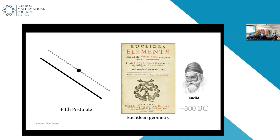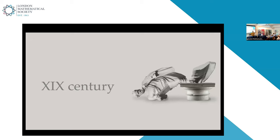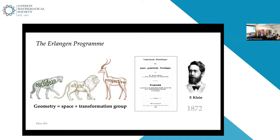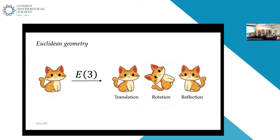Euclidean geometry had a special postulate about parallel lines that more than 1,000 years of illustrious mathematicians tried to prove, to no avail, until the 19th century brought the realization that you can construct other self-consistent geometries that do not rely on the postulate of parallels. This created an entire zoo of different geometric constructions that were somehow disconnected from each other, and it was not clear how to unify them or define what is actually meant by 'a geometry.'